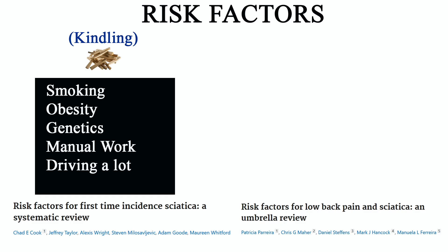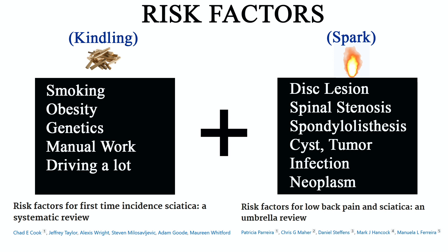Let's talk about the risk factors for disc herniation. It turns out there needs to be two components: a kindling and then a spark. Just like a fire, if you have a ton of kindling and no spark, it's not going to go off — or if you have a huge spark and no kindling, it's not going to matter. Kindling attributes include smoking, obesity, manual work, and driving a lot, where the sparks could be things like disc lesions, stenosis, spondylolisthesis, cysts and tumors, infections, or neoplasms. You need both of these components to make a perfect storm; either alone is probably unlikely to cause the issue.